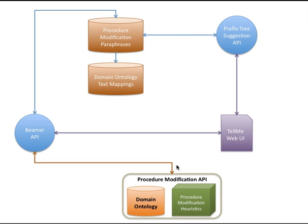The Procedure Modification API relies on procedure modification heuristics to not just implement the procedure modification tasks coming from Beamer, but also generate hypotheses of its own by tightening the procedures, adding missing steps, etc.